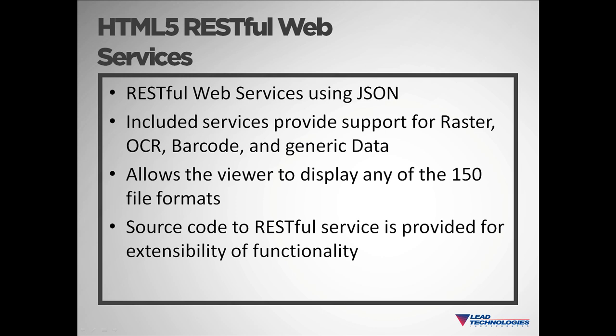The raster service provides file conversion allowing the client to display any of the 150 file formats the tool supports. You pass the service a URL to the file you need converted, specifying the MIME type for the target format, and we will return the file converted to that MIME type. This works for any file format we support, including PDF, DOC, and TIFF, whether single-paged or multi-paged. You can even specify the width and height of each page returned in order to display a thumbnail-sized version of the page.